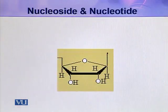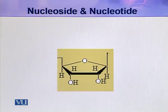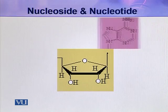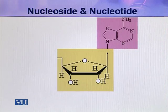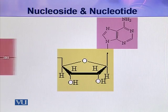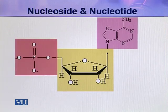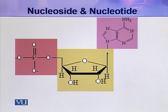In this picture you can see a pentose sugar in its furanose configuration. When a nitrogenous base is attached to this pentose it becomes a nucleoside, and if a phosphate group is then attached to that nucleoside it becomes a nucleotide. So this molecule is a nucleotide with all three of its components.